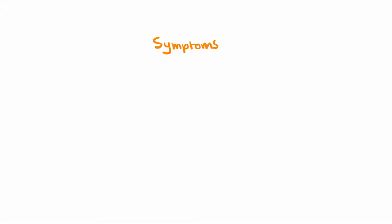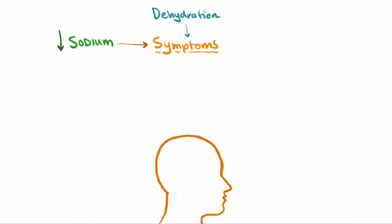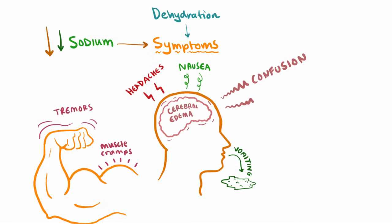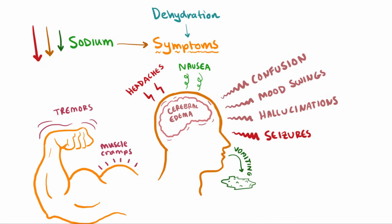The symptoms a person with SIADH experiences are caused by the dilution and loss of sodium in the blood. When your body has a lower sodium concentration than normal, you experience symptoms similar to dehydration: headaches, nausea, vomiting, muscle cramps, and tremors. As sodium concentration continues to drop, the neurons in your brain begin to swell, leading to cerebral edema. This causes confusion, mood swings, and hallucinations. If left untreated, it can lead to seizure, coma, and death.